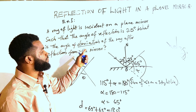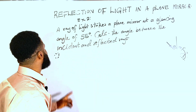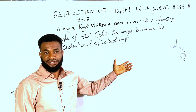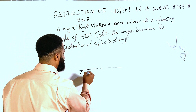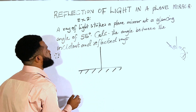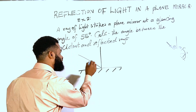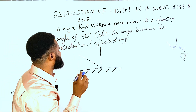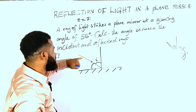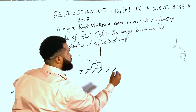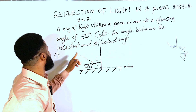Example two: a ray of light strikes a plane mirror at a glancing angle of 55 degrees. Calculate the angle between the incident and the reflected ray. I'll analyze this with a diagram. This is the mirror and this is the normal. The ray strikes the mirror — this is the incident ray — at a glancing angle of 55 degrees, meaning 55 degrees between the incident ray and the mirror surface itself.